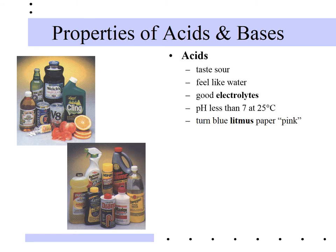Back in elementary or middle school, you probably used litmus paper to identify acids and bases. Litmus paper is chromatography or filter paper with the chemical litmus soaked into it. Litmus is an acid-base indicator — it has two different colors. Blue litmus paper will turn red or pink in an acid. A less common indicator we'll use quite a bit in this unit is phenolphthalein, which is colorless in acids.